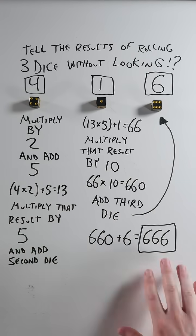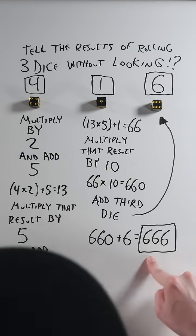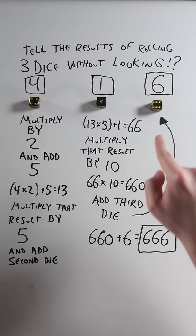Anyway, they tell you the total of six hundred sixty-six and you immediately know they rolled a four, a one, and a six in that order.